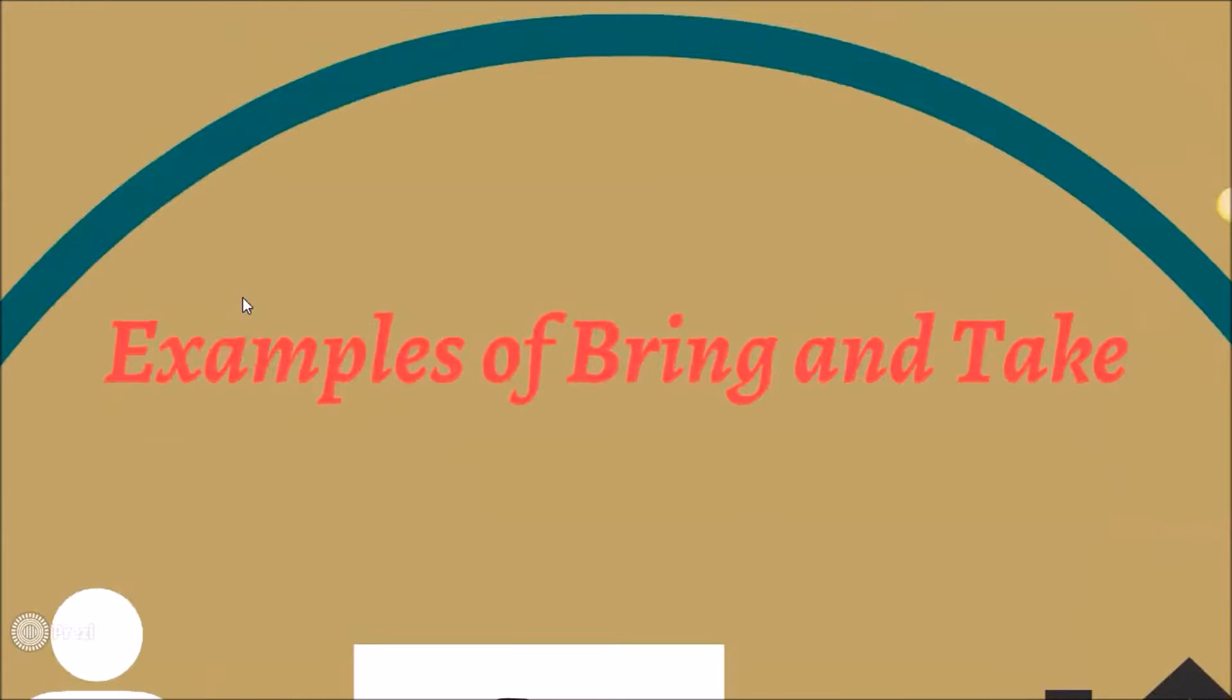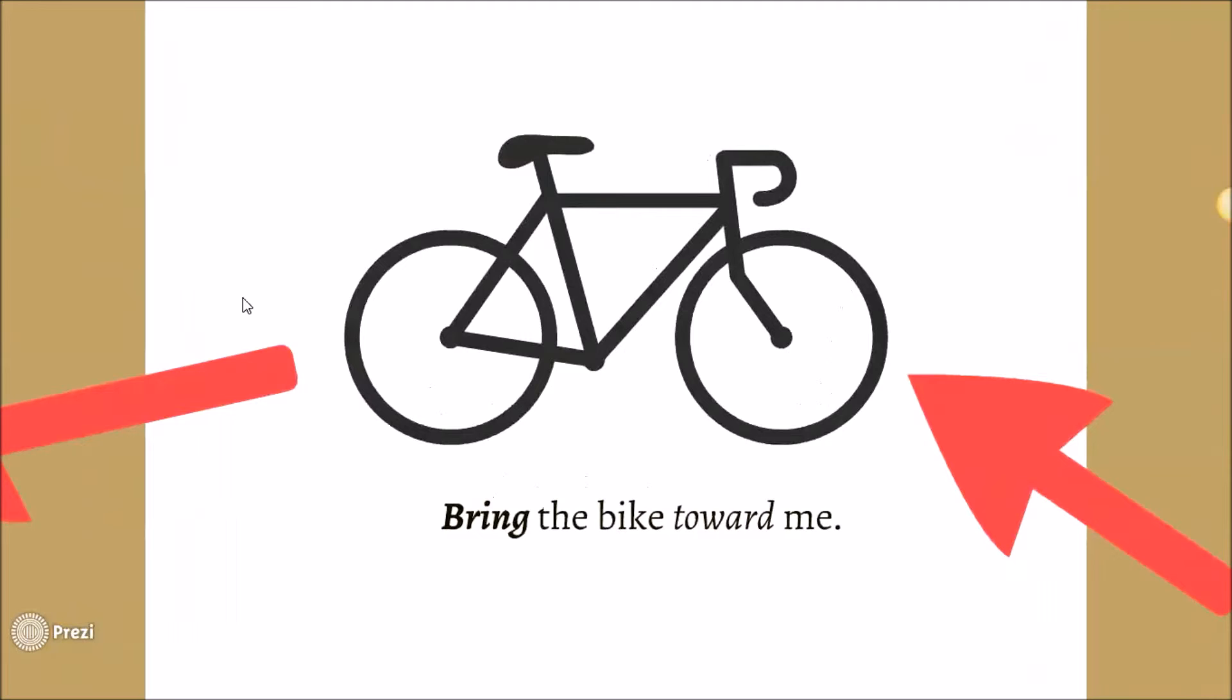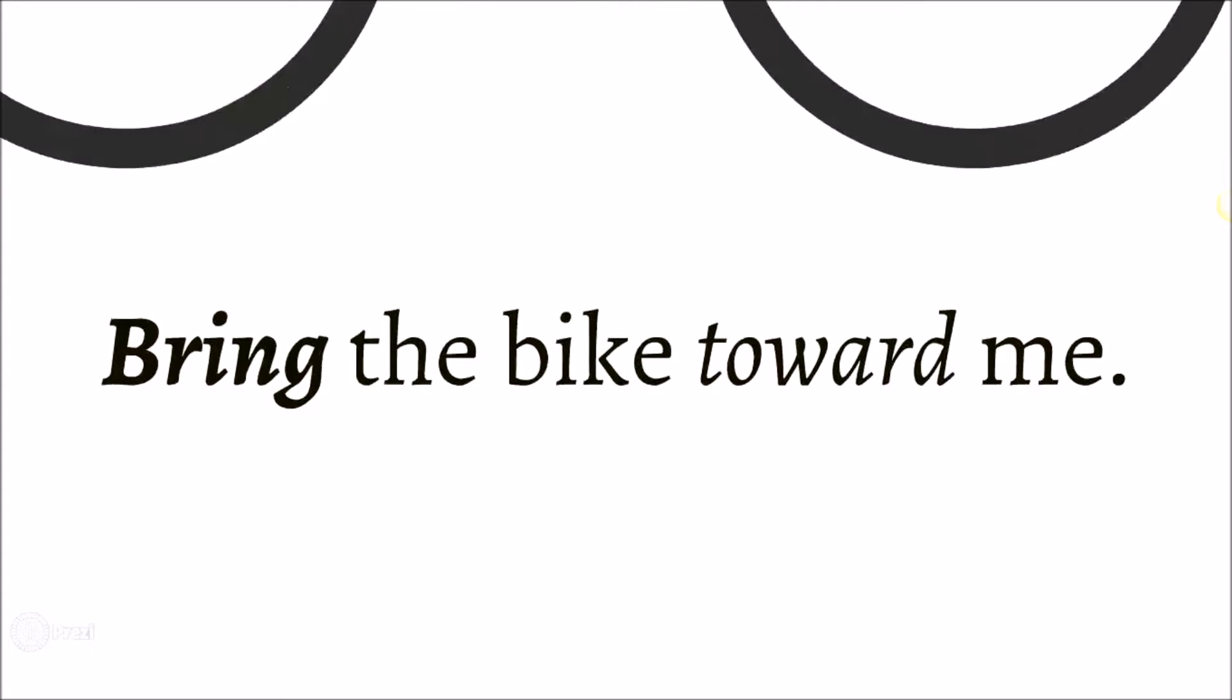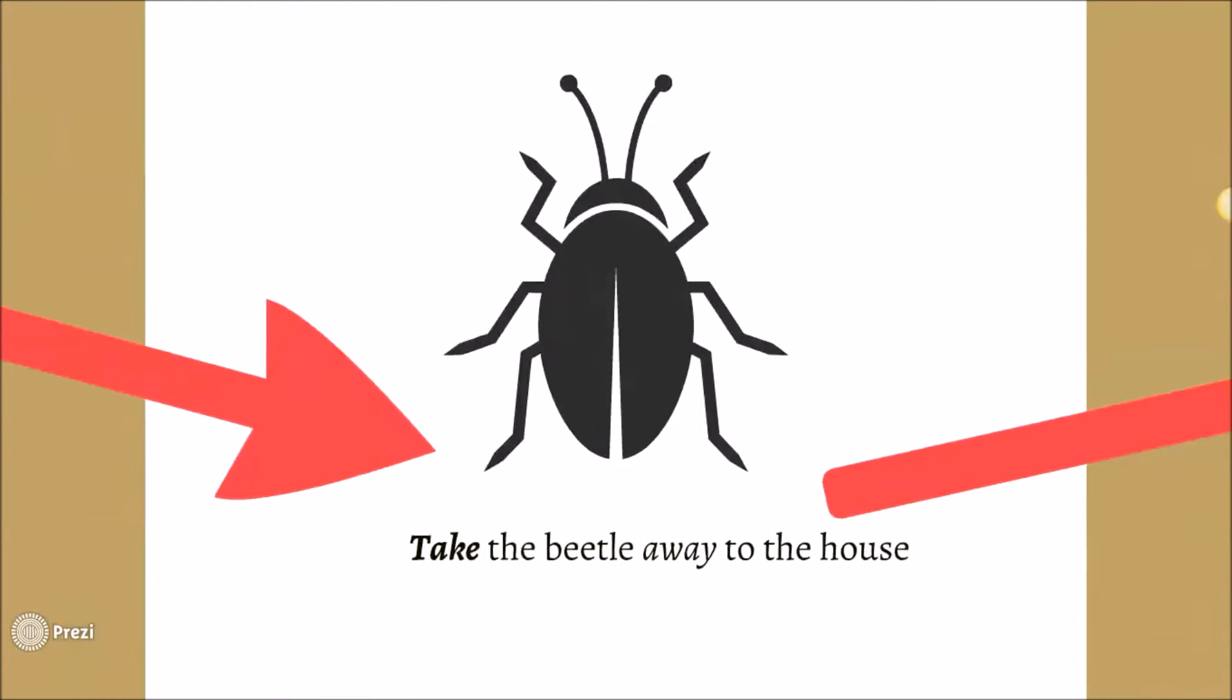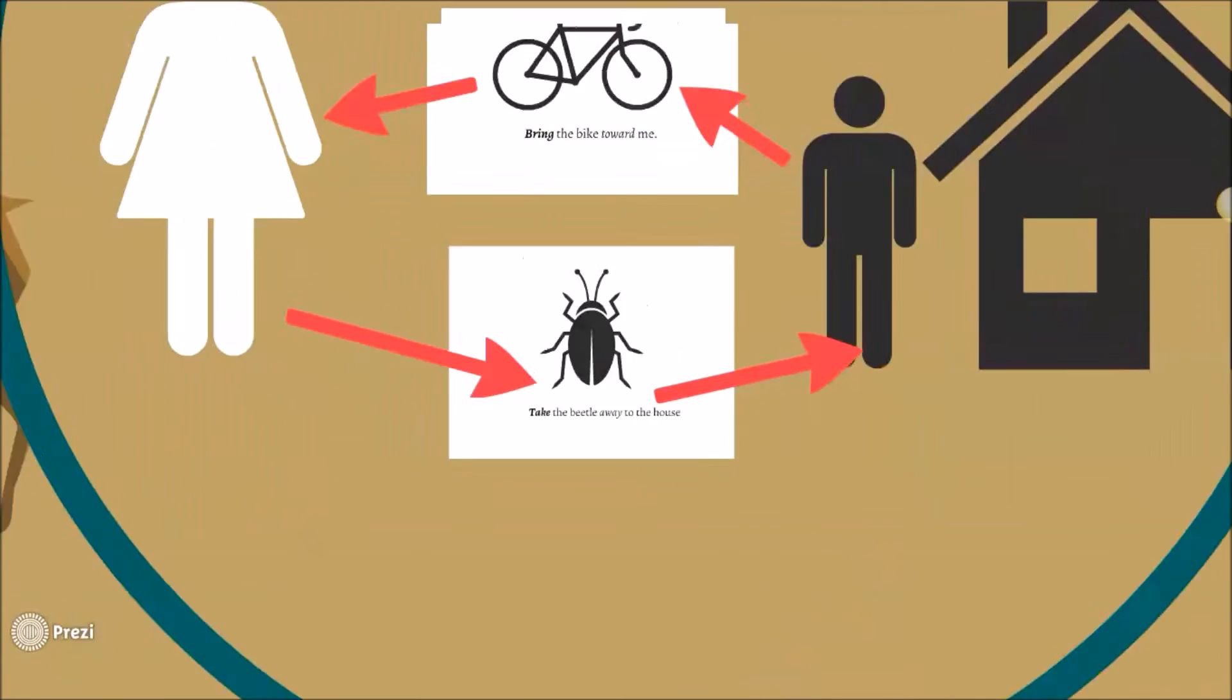So here's some examples of bring and take. Bring the bike towards me. Bring is towards, take is away. Bring the bike towards me. And then we have take the beetle away. Take away. Bring towards, take away.